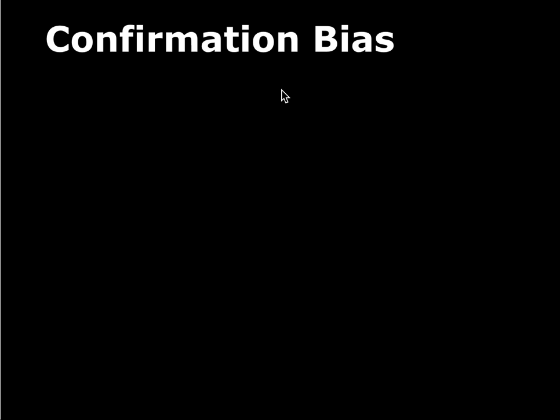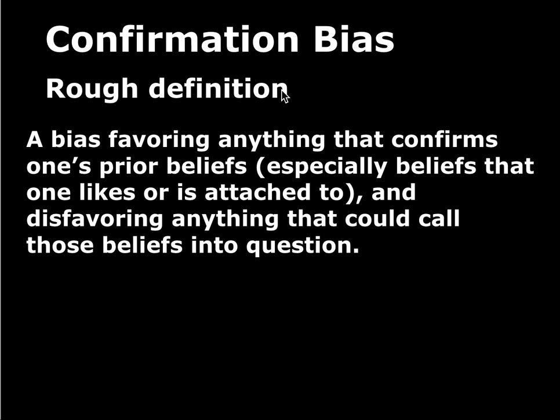The first bias to discuss — and we're going to talk about six of these altogether — is the confirmation bias. Here's a rough definition: it's a bias people have for favoring anything that confirms one's prior beliefs, especially beliefs that one likes or is attached to, and disfavoring anything that could call those beliefs into question.